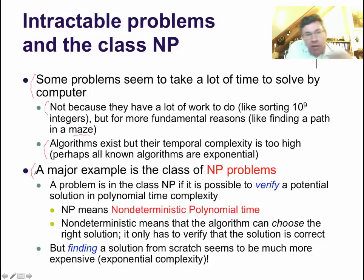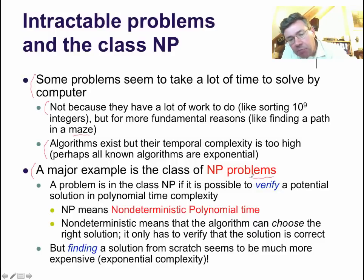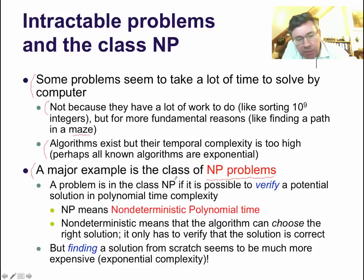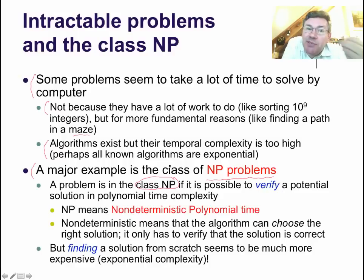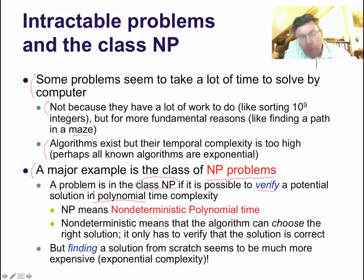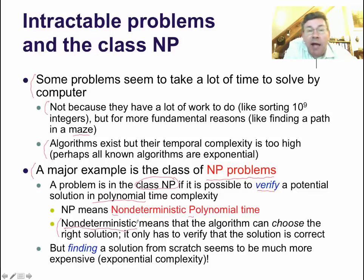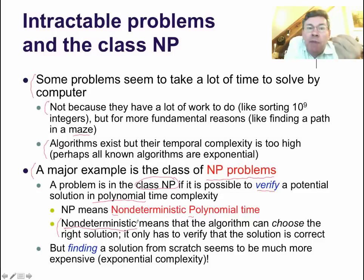A major example which crystallizes the issues and poses the most fundamental question is the class of NP problems. NP is a set of problems, and a problem is in the class NP if a very particular condition is satisfied: if someone gives me a solution, I can easily verify and check it in polynomial time complexity. What that means is that the algorithm is non-deterministic polynomial time. Non-deterministic means that the algorithm has a built-in oracle — it can pick the right solution, like it has a divine inspiration.